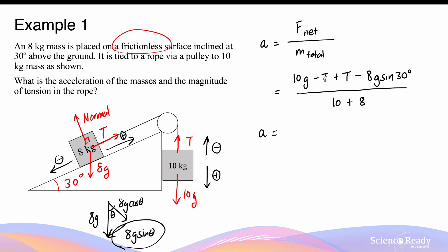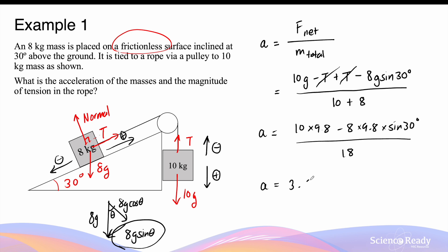In the numerator, the two tension forces will balance out because they are equal in magnitude, so the top part becomes 10 times 9.8 minus 8 times 9.8 times sine 30 degrees, divided by 18. The acceleration here is equal to 3.27 meters per second squared. The direction of acceleration depends on which mass you are referring to. Because it is a positive value, if you are referring to the 10kg mass, this means that it will accelerate downward at 3.27 m/s², as we defined the downward direction as positive earlier. If you are referring to the 8kg mass, that means it will accelerate up the slope at 3.27 m/s², because we defined this upward direction as positive before we started the question.